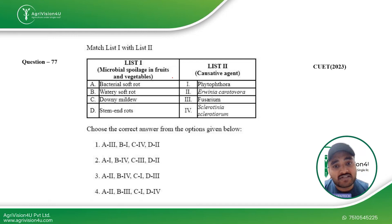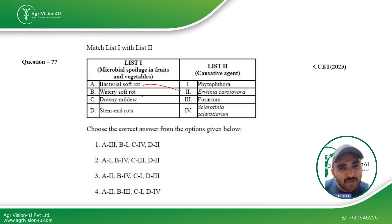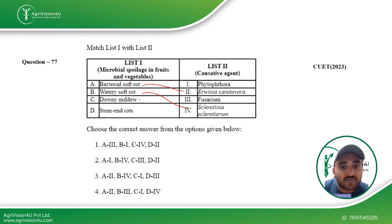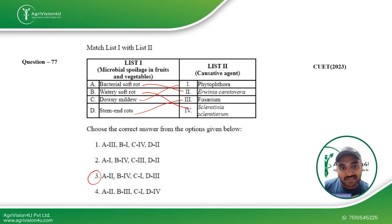The next question asks to match microbial spoilage in fruits and vegetables with their causative agents. Bacterial soft rot is caused by Erwinia carotovora. Watery soft rot is caused by Sclerotinia. Downy mildew is caused by Phytophthora. Stem and root rot is caused by Fusarium. Matching these correctly gives the third option as the right answer.